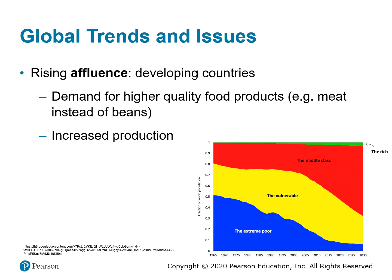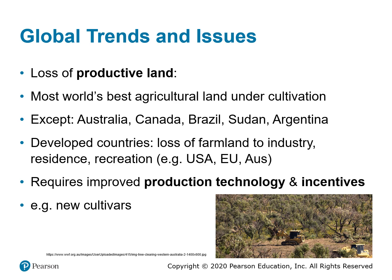Assessing the world's food situation involves factors beyond just meeting minimal food needs. There is rising affluence in developing countries where protein requirements are moving toward more palatable animal products — steaks, chops, eggs, processed meats, and dairy. This increased demand for higher quality food requires increased production. Added to increasing population and energy use, there is the continued loss of productive land. Most of the world's best agricultural land is already under cultivation, with the exception of some countries including parts of Australia, Canada, Brazil, Sudan, and Argentina.